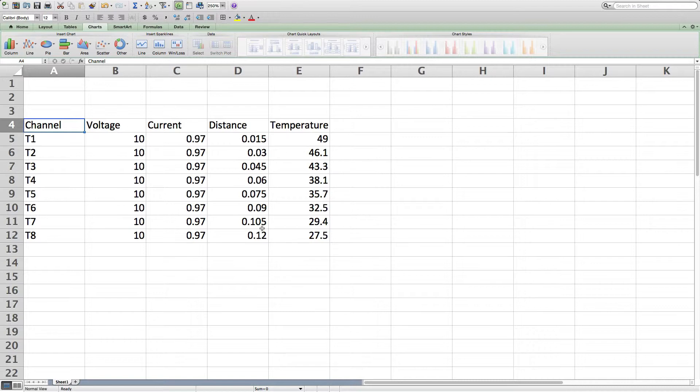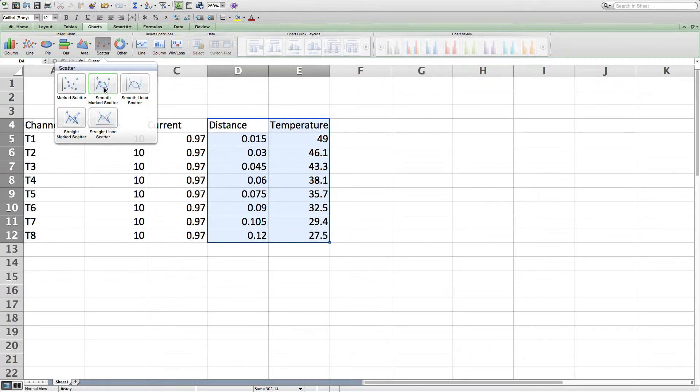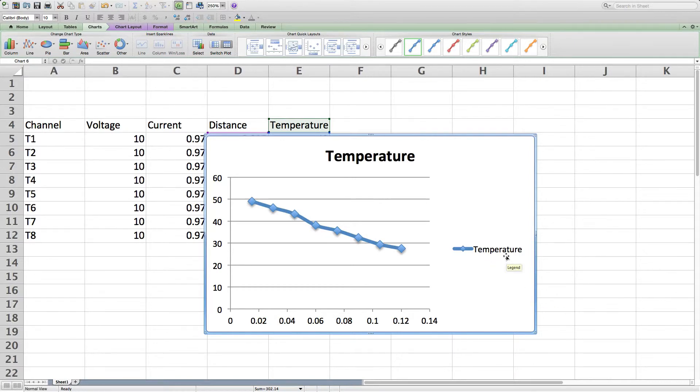Now here's the data, I already collected it, and I want to better interpret this data. So I'm going to make a graph of this. So I highlight those two, go to scatter, smooth scattered plot, and now I have my graph.